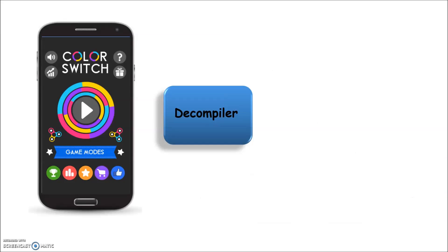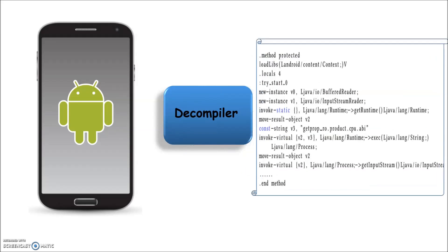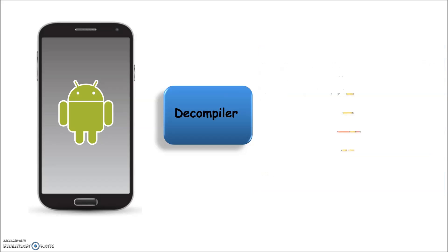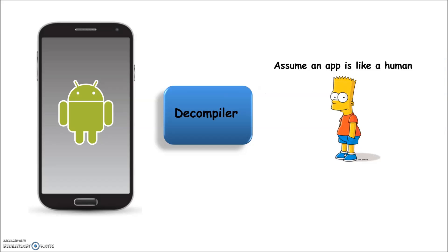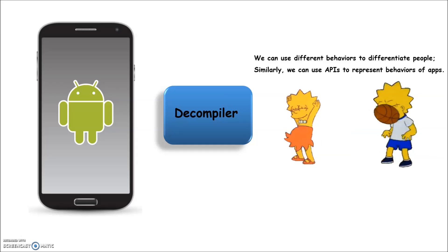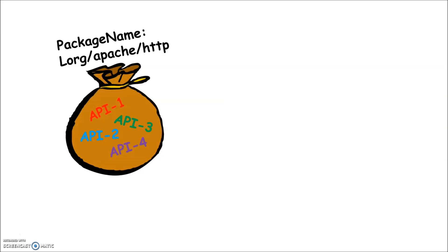In our system, we extract the API calls from Android apps. API calls are used to access operating system functions and system resources. Therefore, the APIs can be used to represent the behaviors of Android apps, just like we can use different kinds of behaviors to differentiate people. We not only extract the APIs, but further analyze the relationships among them.